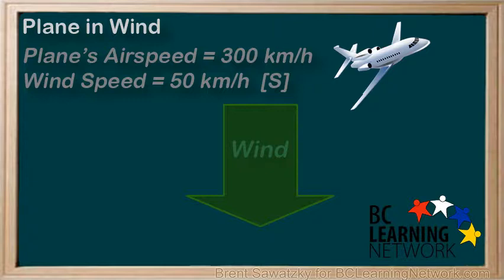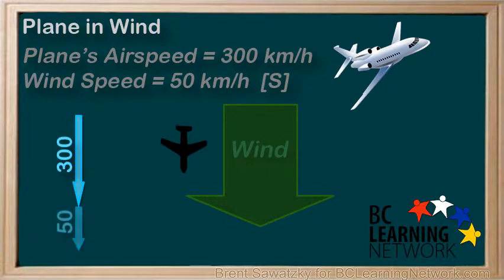Let's talk about some different scenarios. What's the fastest ground speed available to this plane? That is, what's the fastest the plane can travel as viewed from someone standing on the ground below? This fastest ground speed could be achieved by flying in the same direction as the wind. The vector diagram would include the plane speed and the speed of the air, head to tail, and the resultant vector gives a total speed of 350 kilometers per hour.